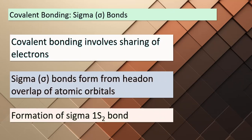We're delving into the world of covalent bonding and exploring sigma bonds. Covalent bonding occurs when atoms share electrons, creating a strong bond between them. What's fascinating about sigma bonds is the way they form: imagine two nuclei approaching each other with head-on overlap of atomic orbitals, resulting in the formation of a sigma bond. This specific bond type is labeled as a sigma-1s-2 bond. Remember, sigma bonds are all about that head-on interaction.